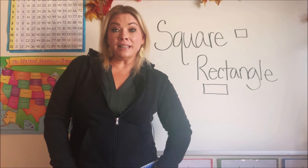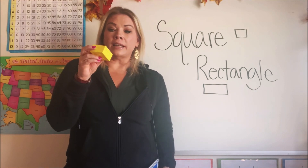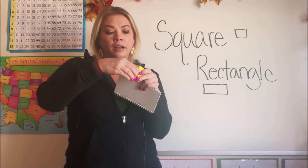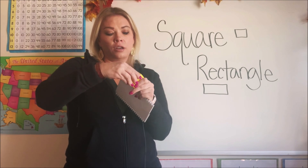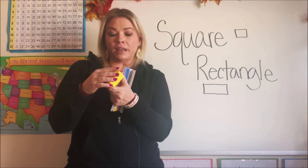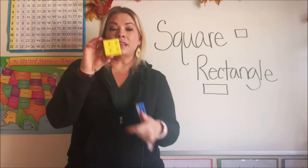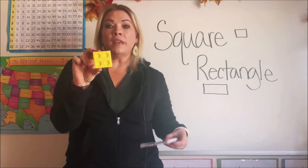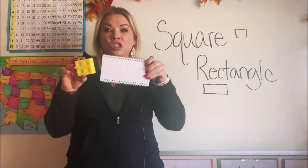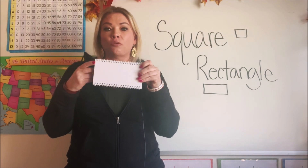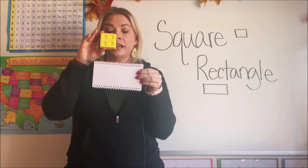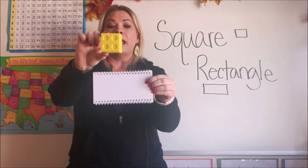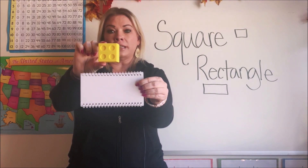Did you find something? I found this — it's kind of a little Lego block that you can open up and put stuff in, and this is my square. And then I found this flip book that's shaped like a rectangle. Can you see the difference between my square and my rectangle?